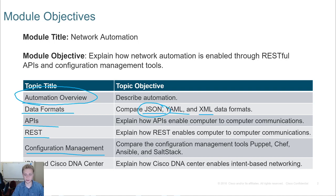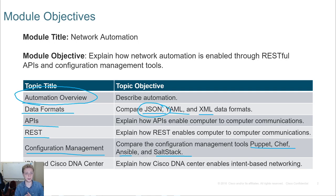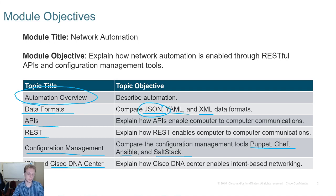We'll cover configuration management — tools like Puppet, Chef, Ansible, and SaltStack. These are awesome tools that will allow us to do things like backup our configurations, modify our configurations, and so forth. And of course we're going to talk about Cisco's DNA Center, which is really what they want you to spend those big dollar signs on — very, very expensive, but it is some pretty cool stuff.